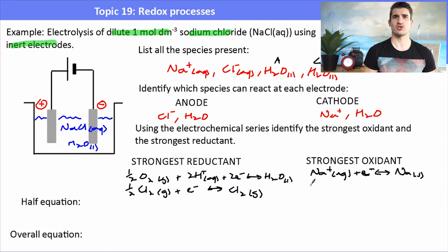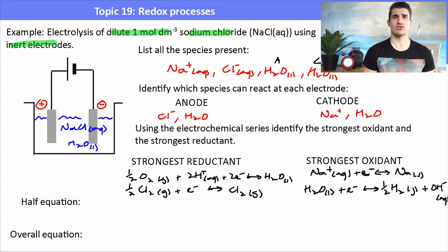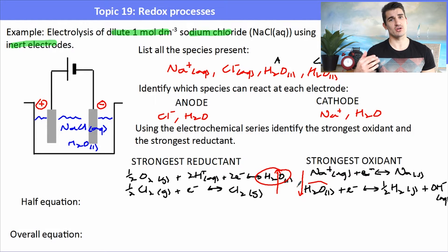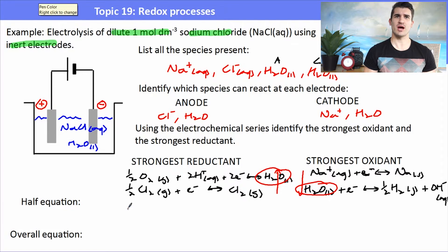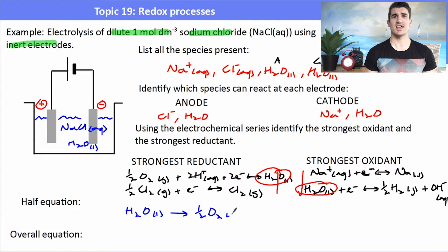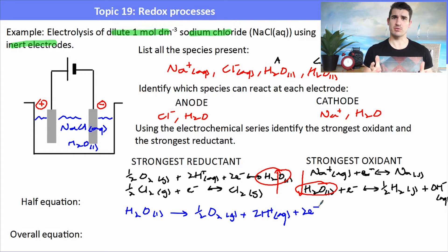Copying out the half-equations: sodium ions forming sodium solid, and water turning into hydrogen gas. Water appears at both the anode and cathode, so we could form hydrogen gas and oxygen gas. The strongest reductant is water and the strongest oxidant is water, meaning water will be reacting at both the cathode and the anode — it is the strongest oxidant and strongest reductant in this cell.